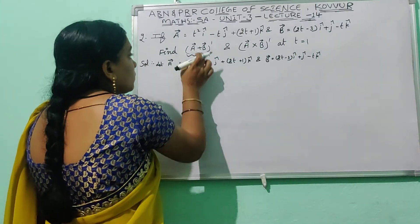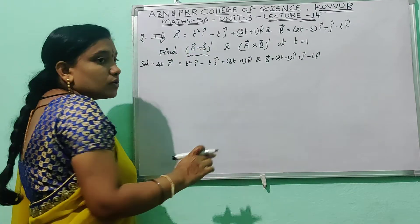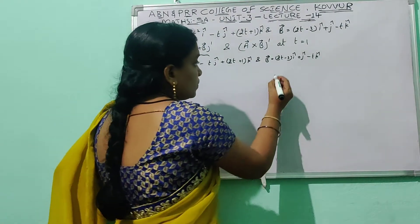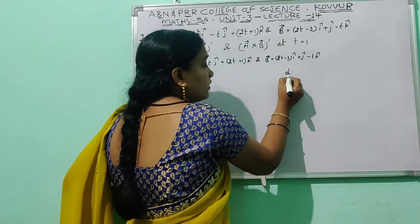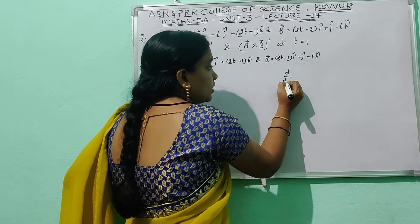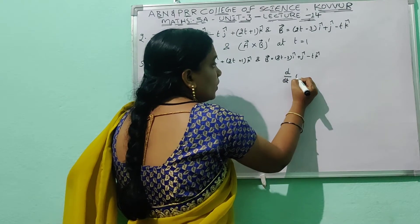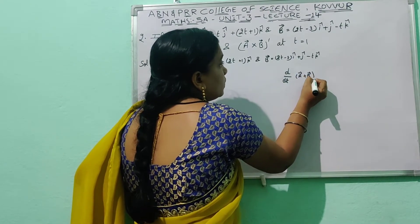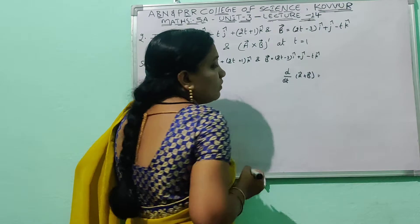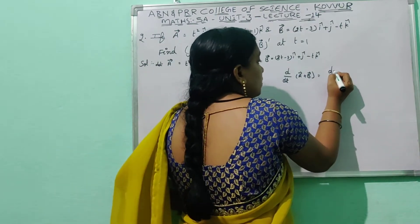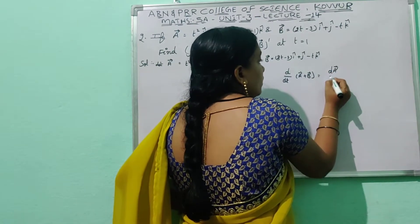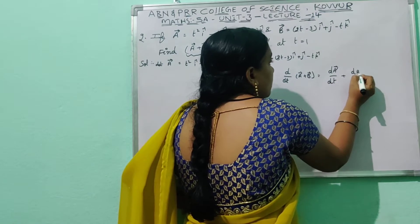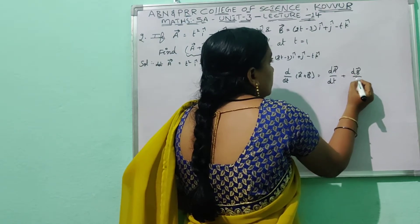Generally, for the derivative of (ā + b̄), we use the property: d/dt(ā + b̄) = dā/dt + db̄/dt. So the derivative of the sum of two vectors equals the sum of their individual derivatives.